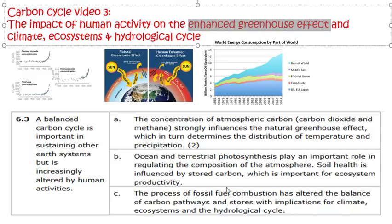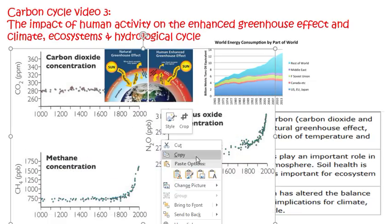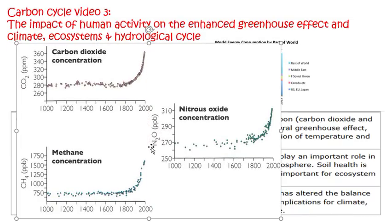We'll kick off with the easy bit, which is just about the concentration of atmospheric carbon being increased by humans. If we have a look at these few graphs showing greenhouse gas concentrations in parts per million - and for methane, parts per billion - you can see that from the turn of the industrial revolution to present day, there's been an exponential increase. It's not just a linear increase, it's not a steady increase. It's your typical hockey stick, J-curve type pattern. So it's rising super quick.